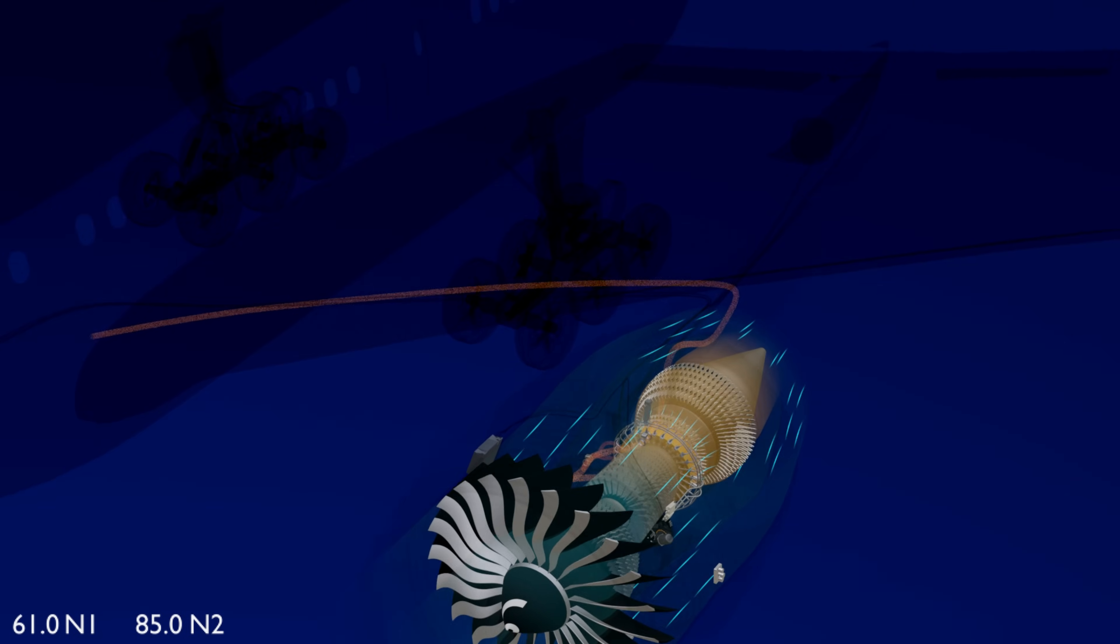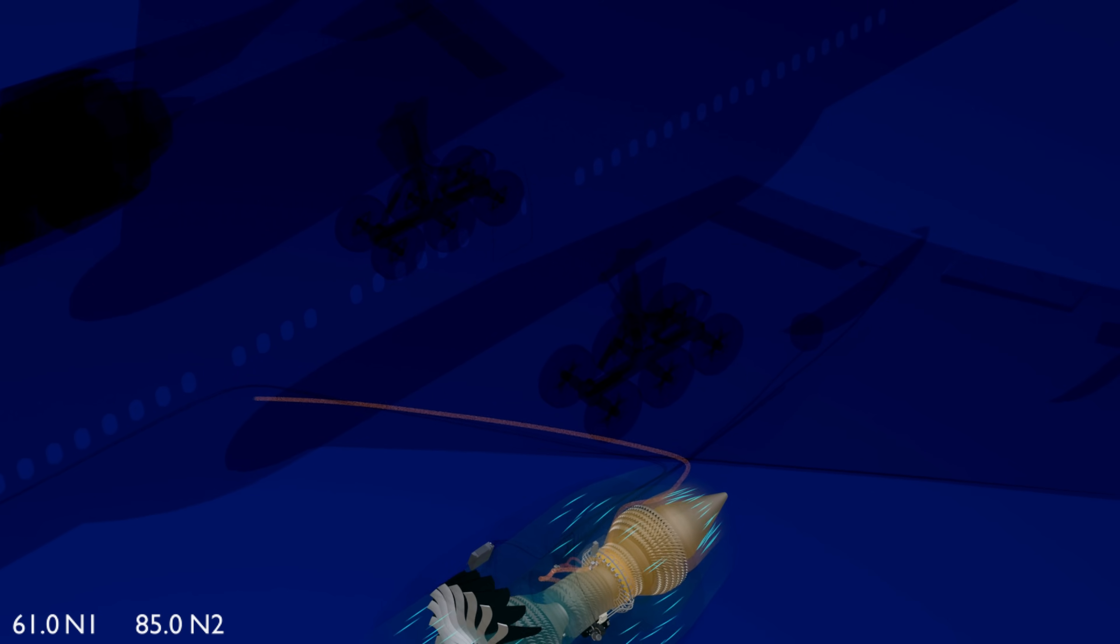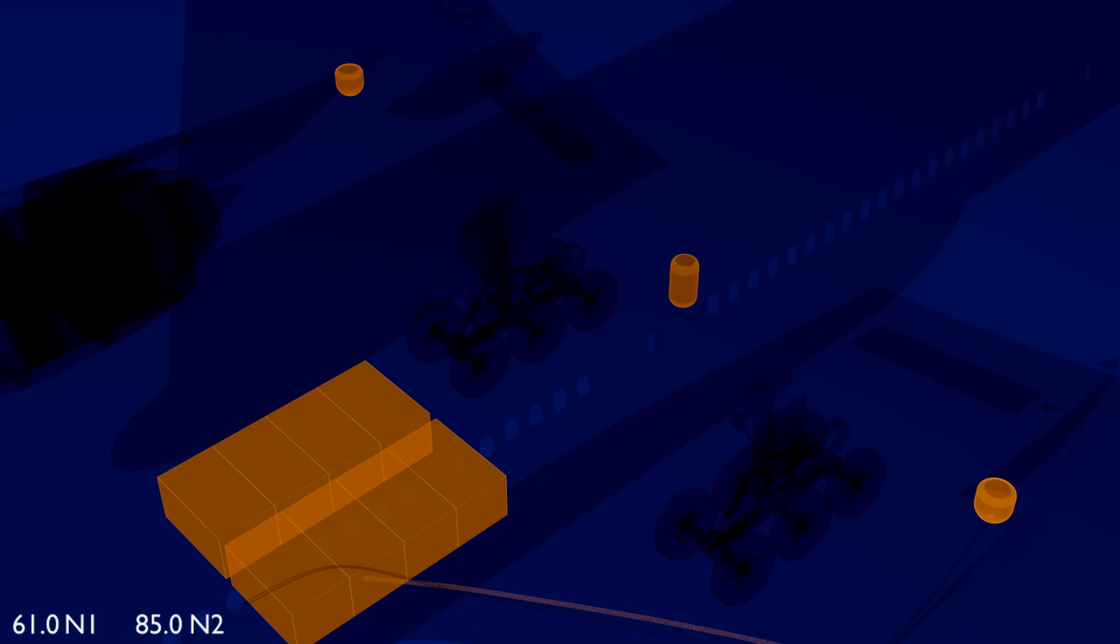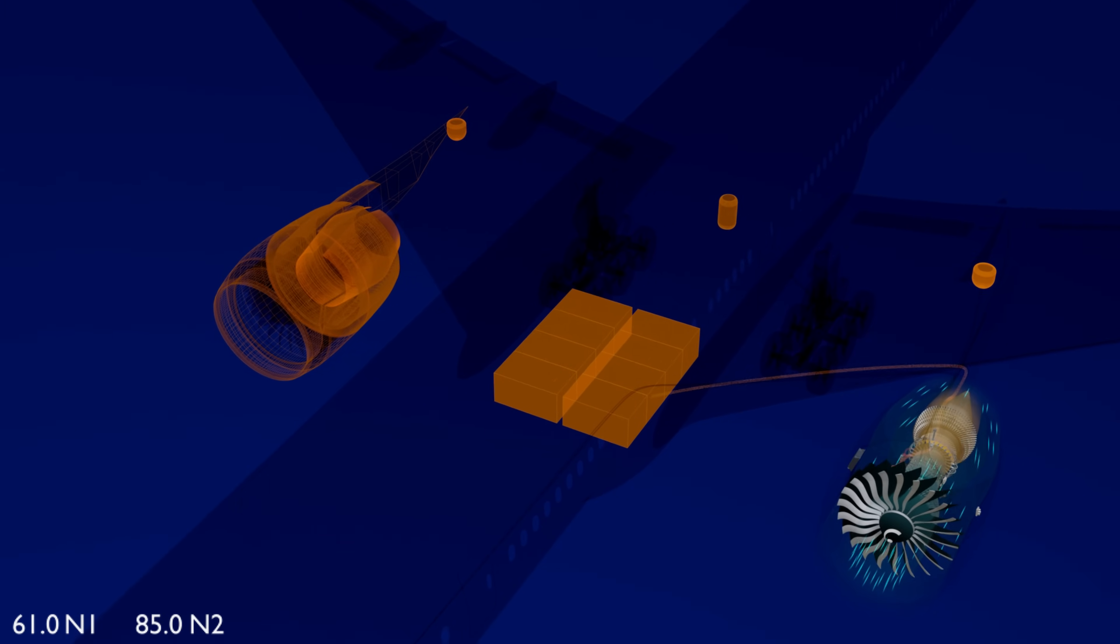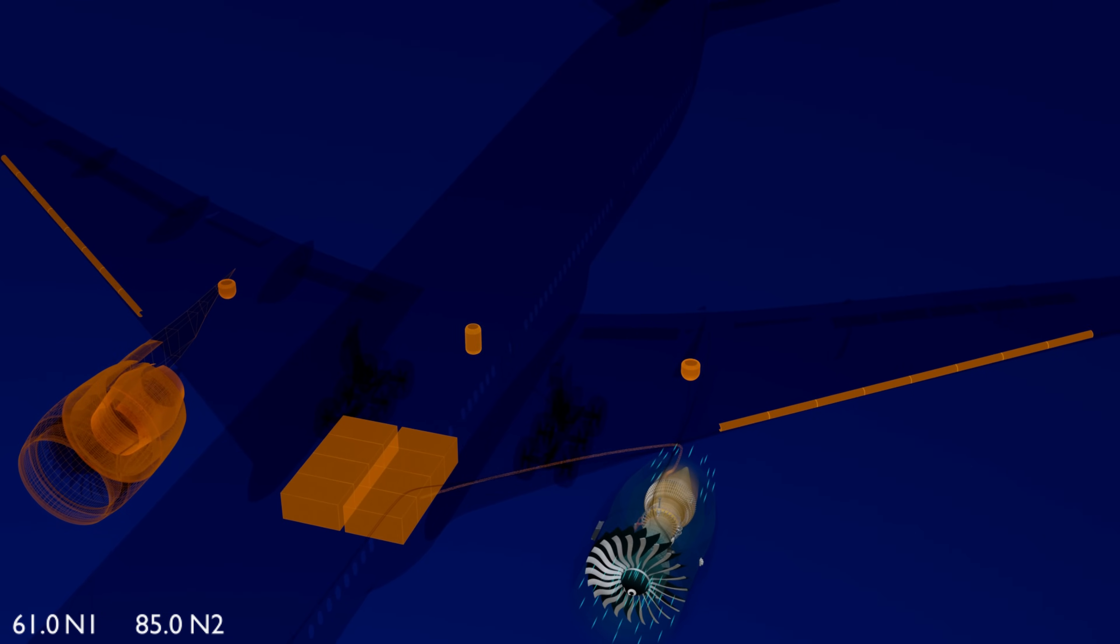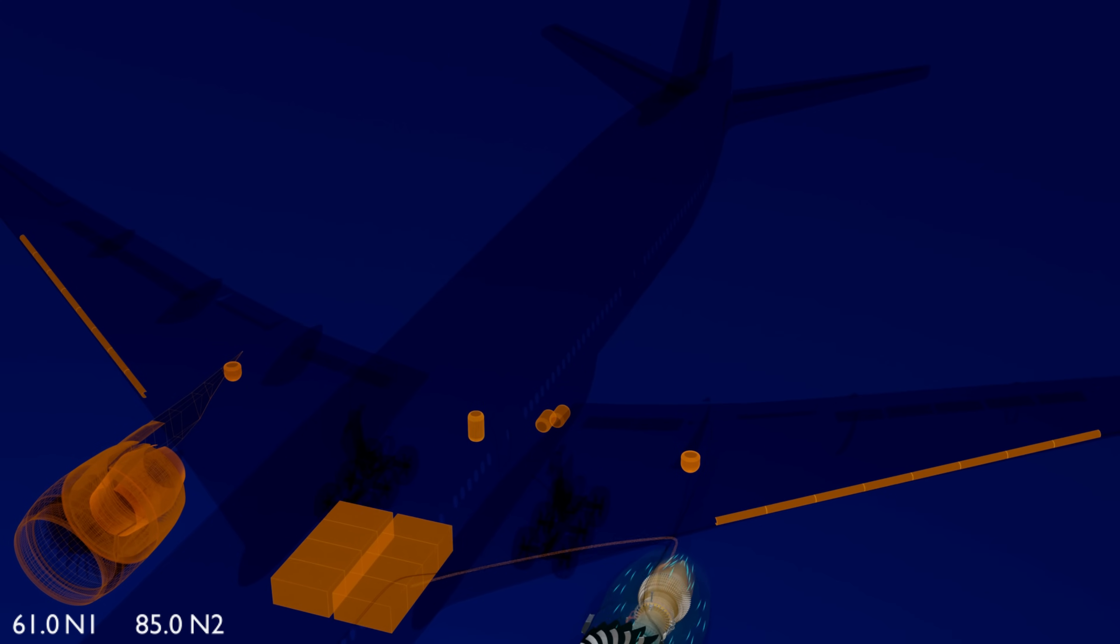The distribution ducts transfer the engine bleed air to the air conditioning packs, hydraulic reservoir pressurization for opposite engine starting, wing anti-icing, air-driven hydraulic pump operation, and aft and bulk cargo heating.